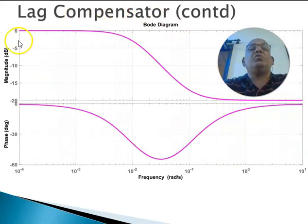The Bode plot of the lag compensator is shown over here. At low frequencies you have no amplification or attenuation, whereas at high frequencies it is attenuated.